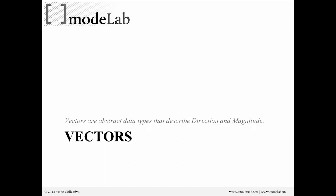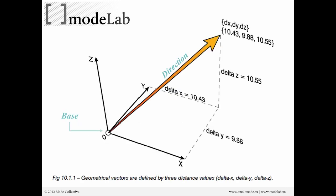The way we're going to calculate attractor influence within our grid is through vectors. Vectors are an abstract data type — they're not actually a piece of geometry. They describe two properties: direction and magnitude. Any vector can be represented showing us the direction going from one point to another; the magnitude is how long that line with an arrowhead is. The parts of a vector are actually the difference, or delta, between x, y, and z.